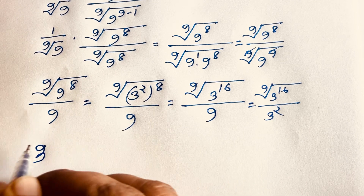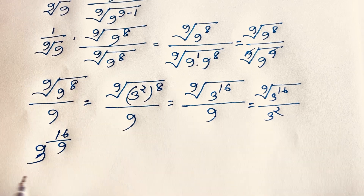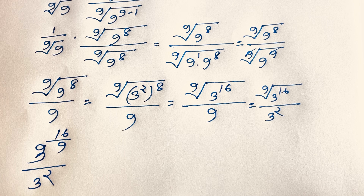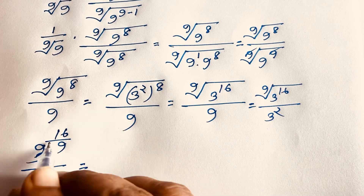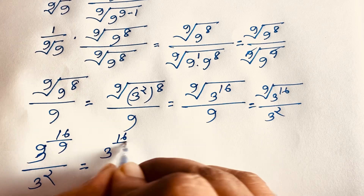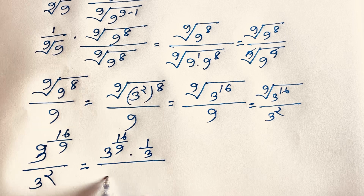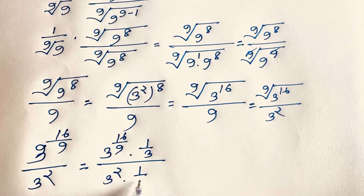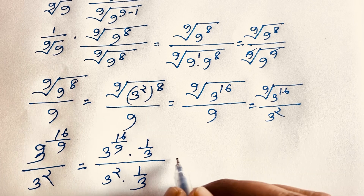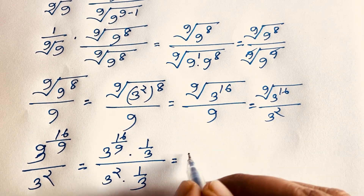We have 3 to the power 16/9, and 3 to the power 2 times 1/3, and 3 to the power 2 times 1/3. These cancel out, bringing us back to the previous line with 3 to the power 16/9.